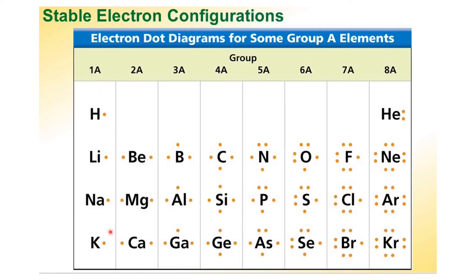Group 1A elements have 1 valence electron, group 2A elements have 2 valence electrons, and so on. Group 7A elements have 7 valence electrons, and group 8A has 8 valence electrons, except helium. These noble gas elements have fully filled orbitals, while the rest do not. To achieve fully filled orbitals, some elements lose electrons and others gain them. For example, if lithium loses an electron, that electron can be gained by fluorine to have 8 electrons in total and become stable. This losing and gaining of electrons leads to the formation of ionic bonds.